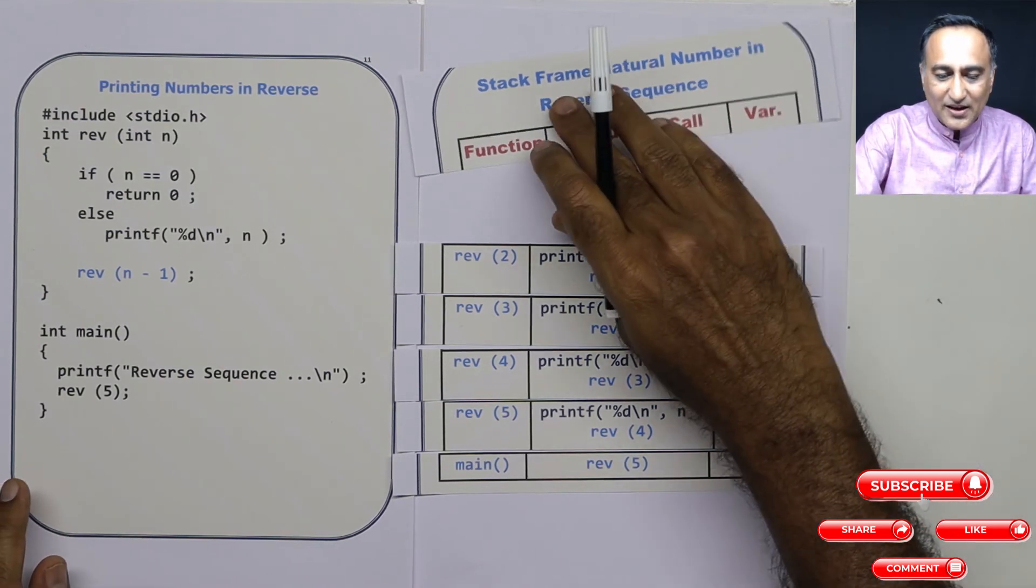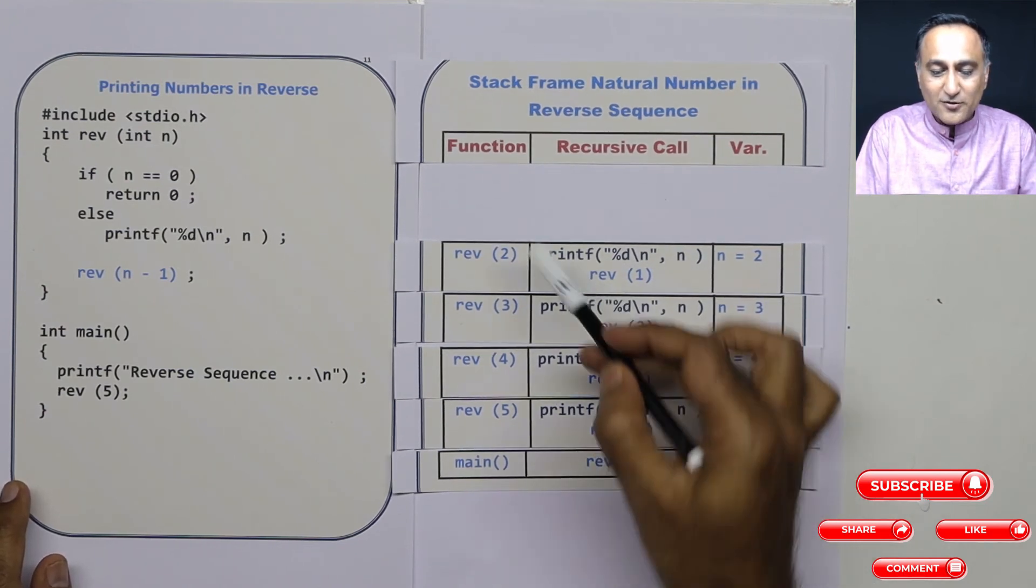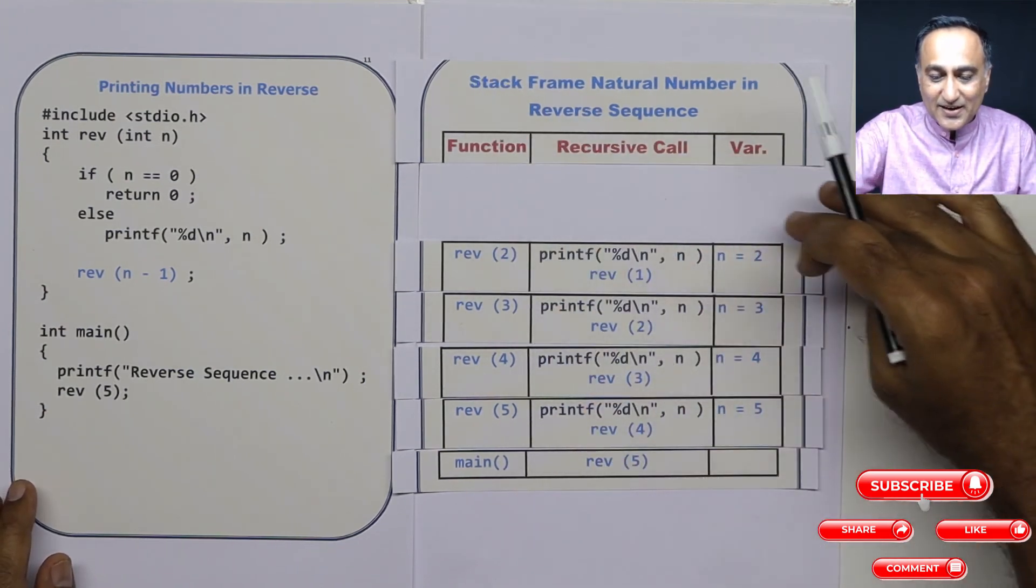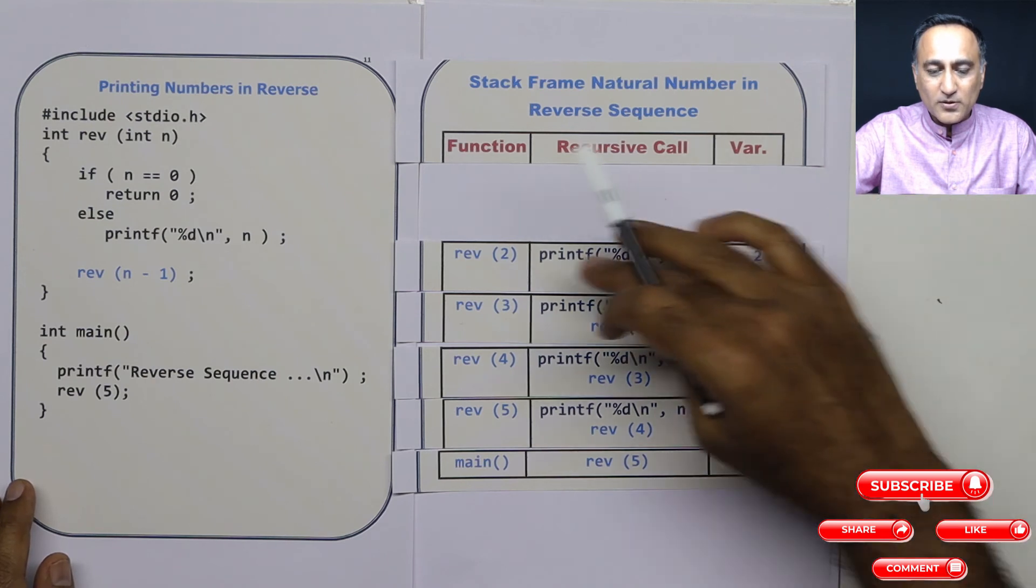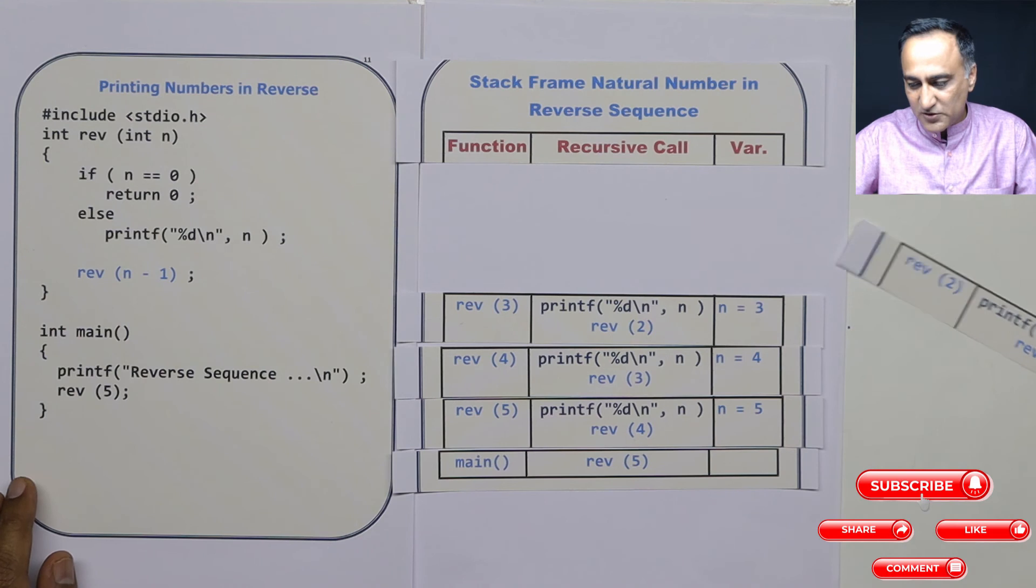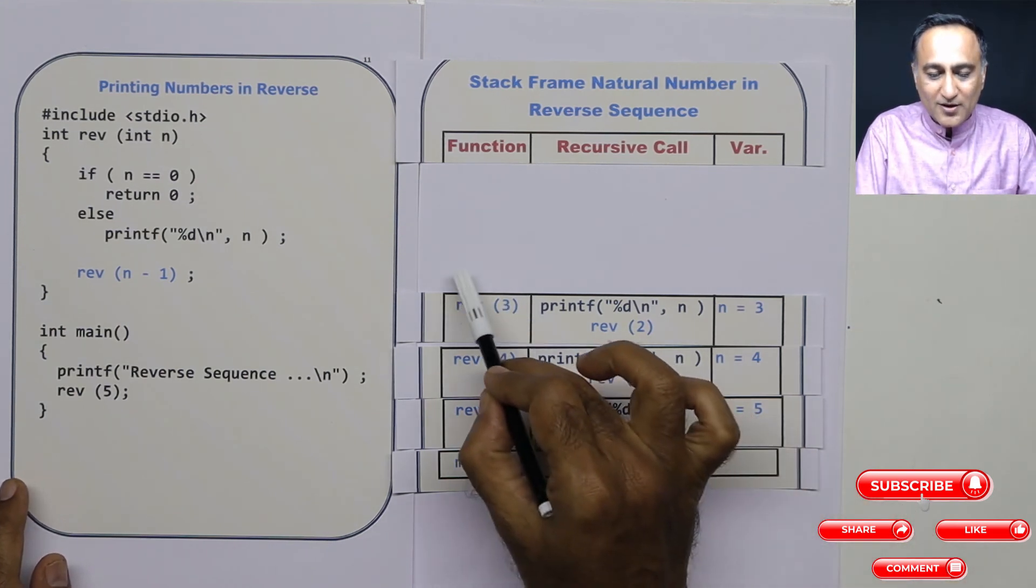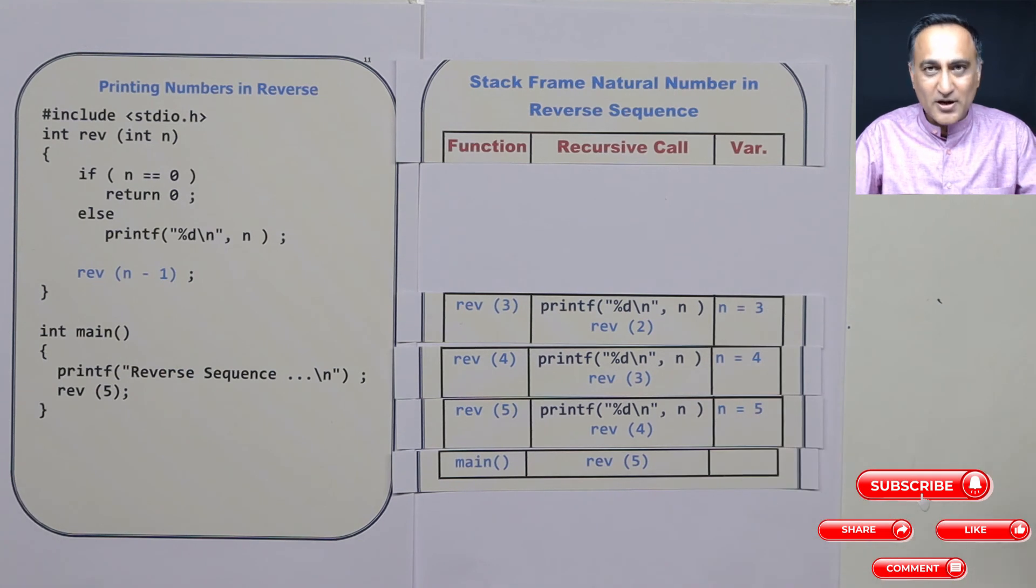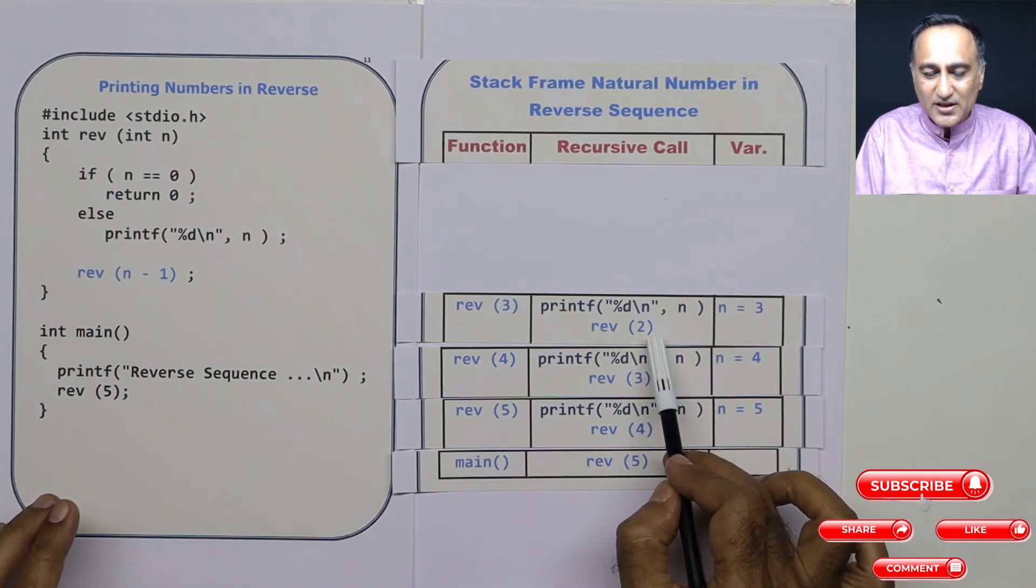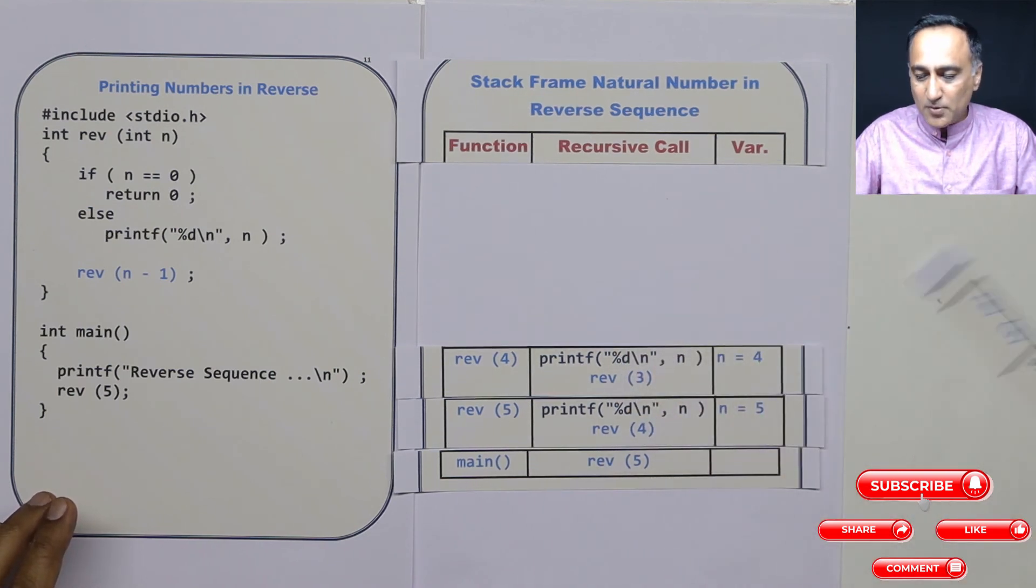Now since reverse of 1 has been processed, printf was already processed before, reverse of 1 got processed. Since that stack frame got popped out, that means reverse of 2 also has completed execution. I pop this out. Then what I do is reverse of 2, reverse of 2 was popped out, it was already executed. So this line got executed means this reverse of 3 has also completed execution. So I pop this out.